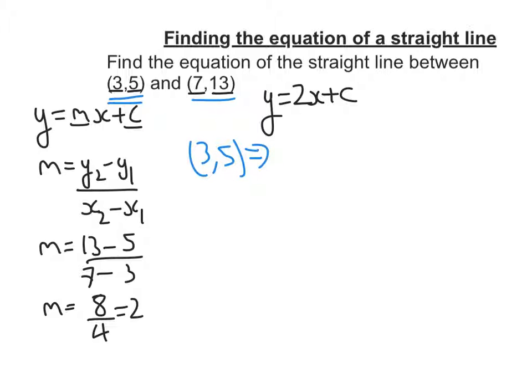So the y becomes a 5. It's going to equal 2 times, and the x becomes a 3, so that's the x-coordinate plus c. So I get 5 is equal to 6 plus c. So now I'm going to solve this equation. So I take away 6 from both sides, and I get c is equal to negative 1.